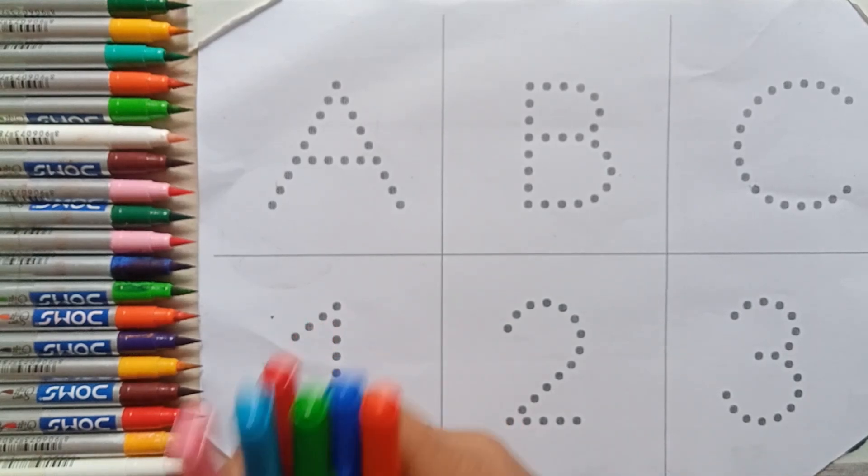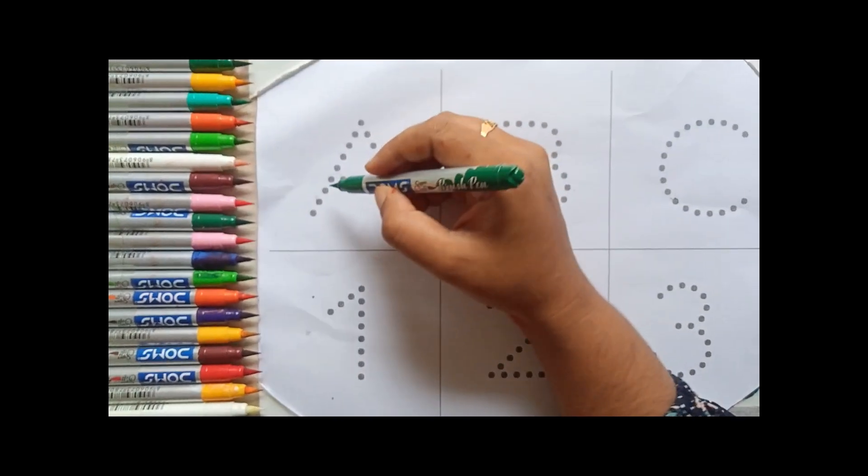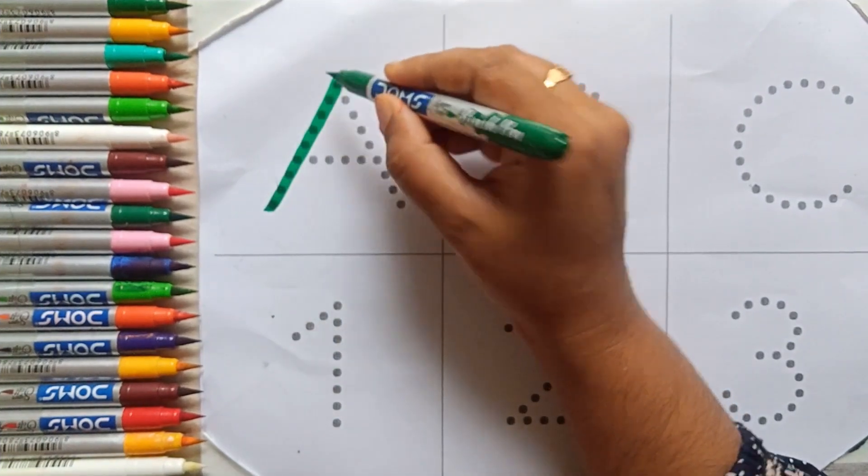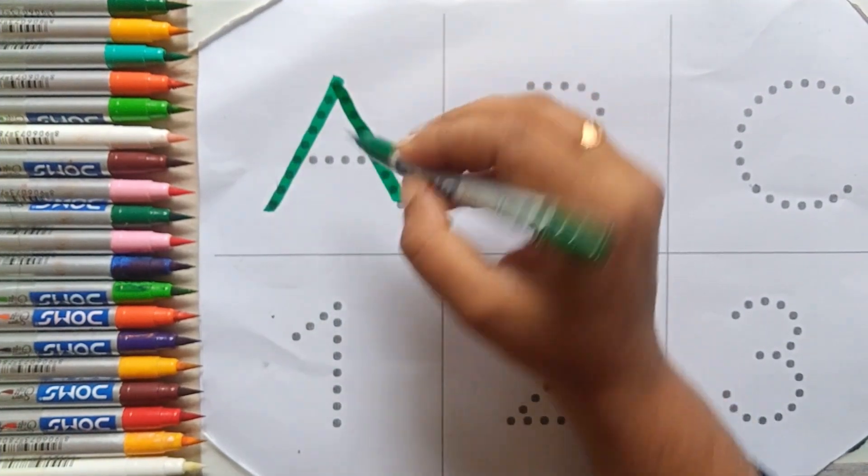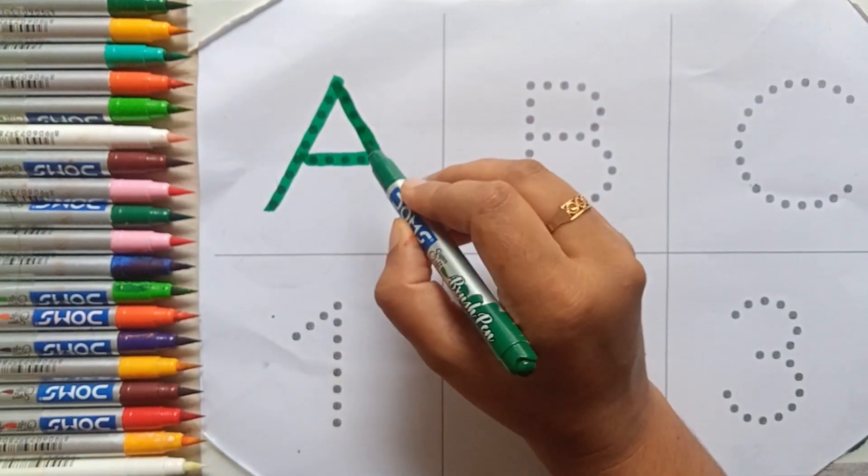Let's start with colors. Green color. A for airplane.